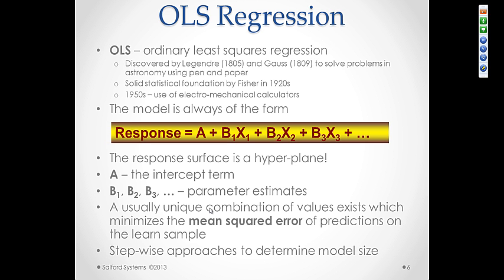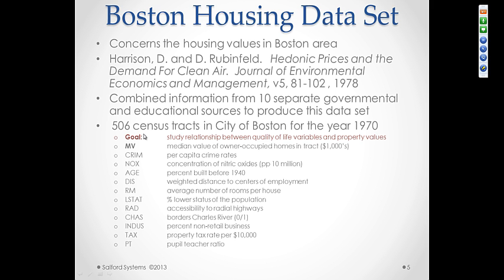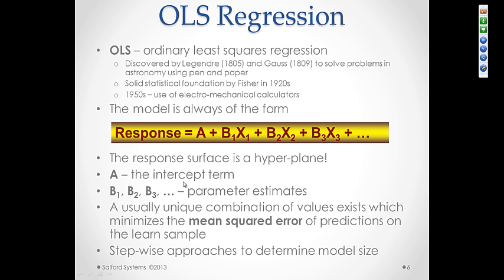Time to introduce the classical definition of regression, which I hope most of you already know what it is. I'll just reiterate it that in the classical regression setting, a response is modeled as a linear function: a plus b1x1 plus b2x2, etc. A being the intercept term, b's are the parameter estimates. And a usually unique combination of values of all of these parameters can be found, which minimizes the so-called mean squared error. Classical regression starts with mean squared error. But again, a classical setup, fairly straightforward stuff that we think all of you already know about.